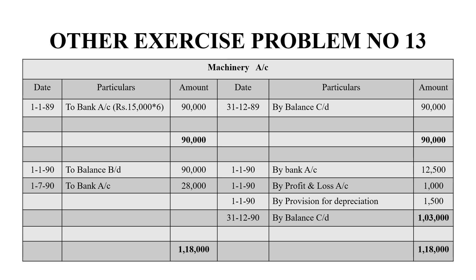Now we are going to open the machinery account. On 1-1-1989, we purchased 6 machines for Rs.15,000 each, so we debit bank account by Rs.15,000 × 6 = Rs.90,000. The grand total on both sides is Rs.90,000. The balance brought down to the next year is Rs.90,000.